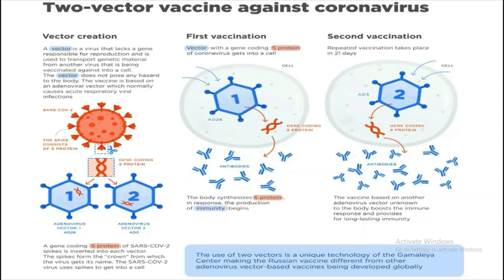SARS-CoV-2 uses its spike protein to bind to the ACE2 receptor and get into a cell. When we take the first vaccination containing Ad26, the S-gene present in it expresses the S-protein. Since this S-protein is foreign to our body, antibody production begins, starting immunity in our body.